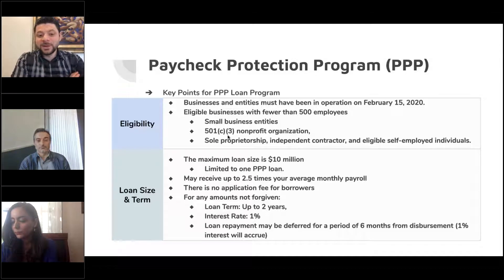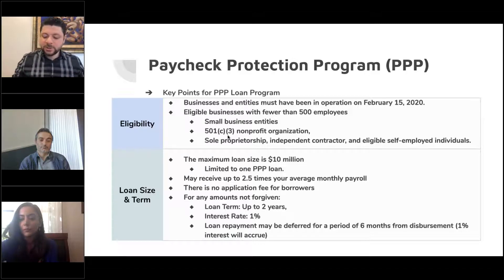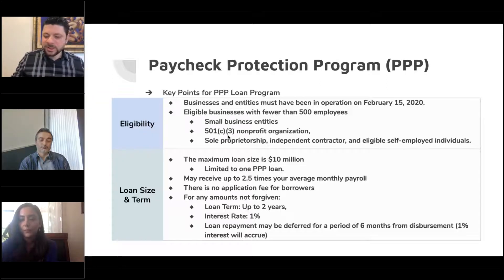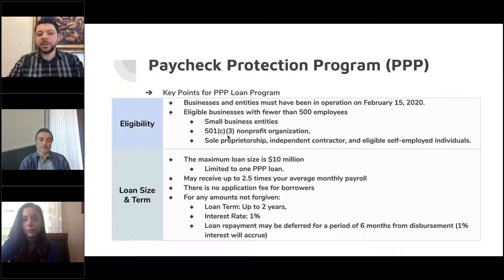Businesses and entities must have been in operation on February 15th. For seasonal borrowers, the calculation method differs. Eligible businesses are similar to EIDL: small business entities, 501(c)(3) nonprofit organizations, sole props, independent contractors, eligible self-employed, and 1099 folks. This loan can go up to $10 million. You can only have one PPP loan per business. If you're using portions of EIDL for the PPP purpose as well, you can actually refinance that into this loan.